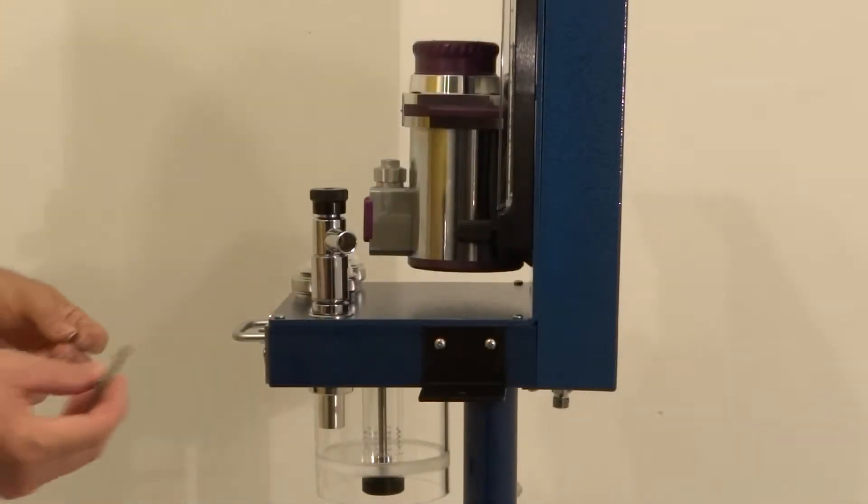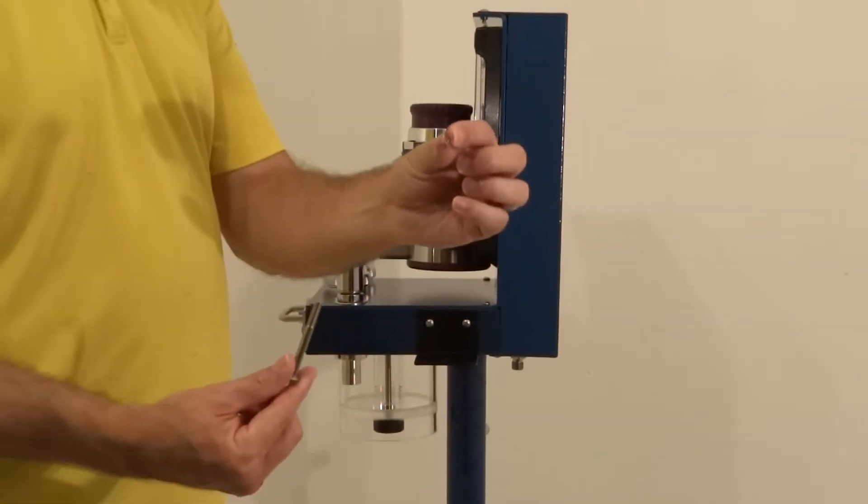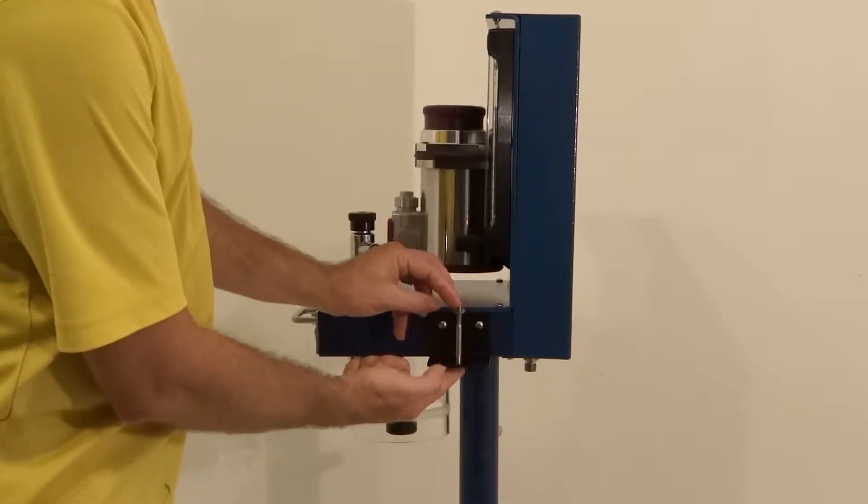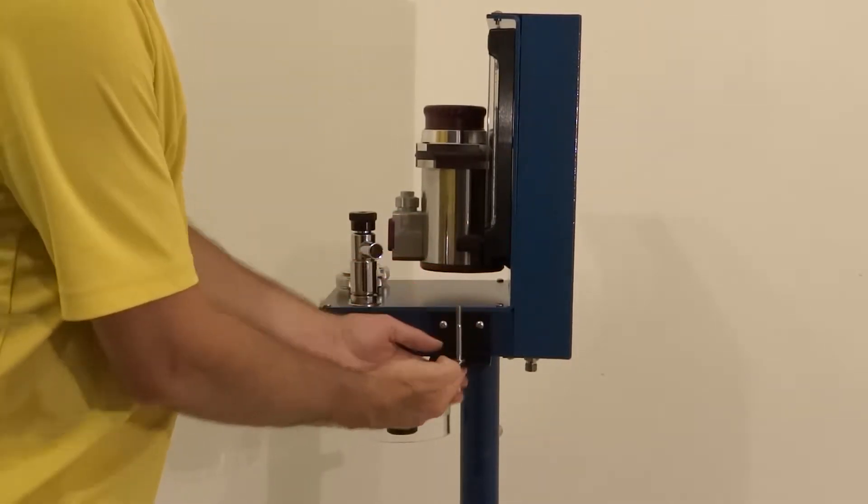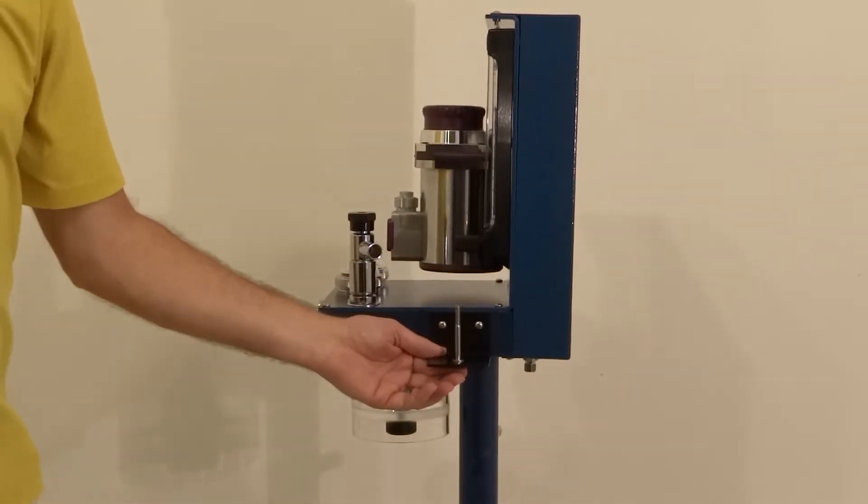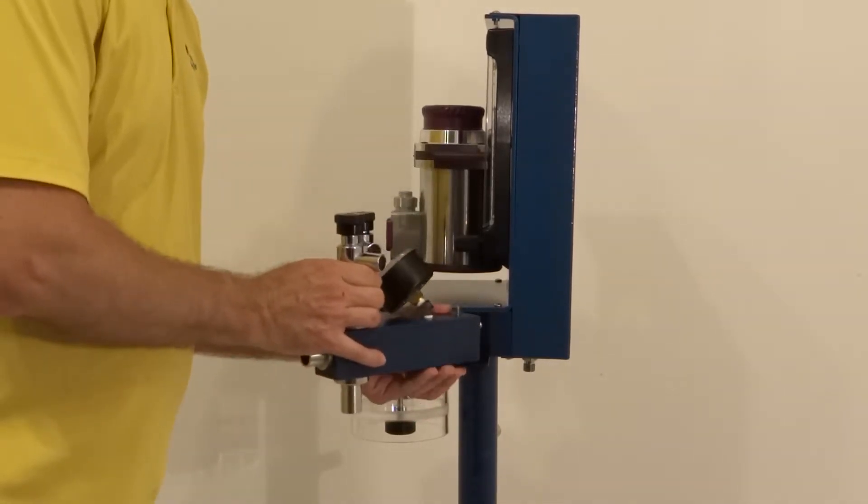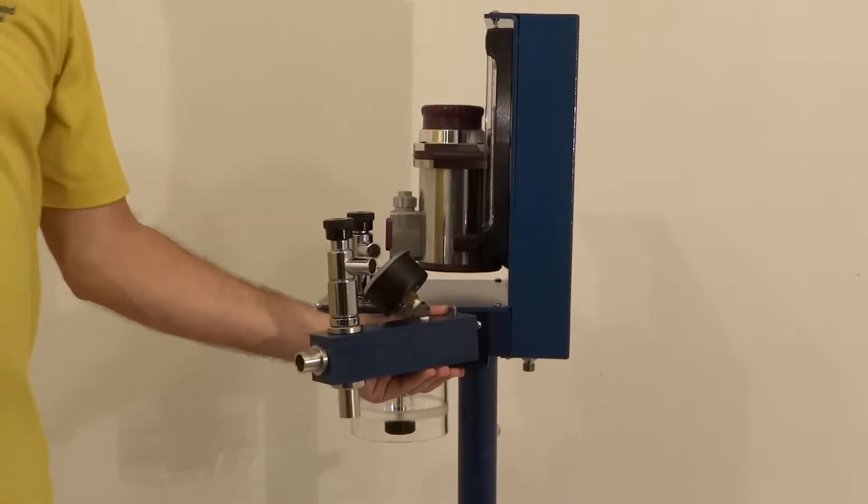Next, place the supplied bolt up through the hole of the bracket and place the supplied washer onto the bolt. Place the Bain Adapter onto the bolt and then thread the supplied knob onto the bolt and tighten.